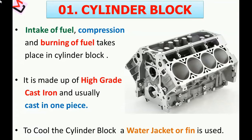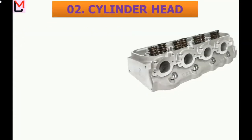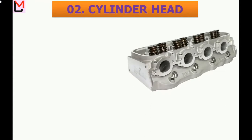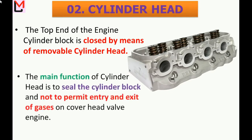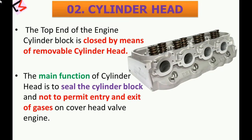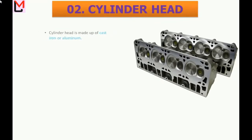A water jacket is used in heavy vehicle engines, while fins are used in motorbike engines. The second part of the internal combustion engine is the cylinder head. Here you can see the image of the cylinder head. The top end of the engine cylinder block is closed by means of a removable part known as the cylinder head. Its main function is to seal the cylinder block and not to permit entry and exit of gases on the overhead valve engine.